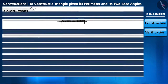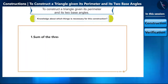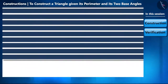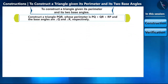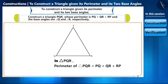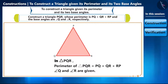Let's understand this construction. First of all, let's see what information is necessary: one, the sum of all three sides; and two, the measure of the two base angles on the base side. Now let's learn to construct. For example, let's assume we have to construct a triangle PQR whose perimeter is PQ plus QR plus RP, and the base angles are angle Q and angle R respectively.